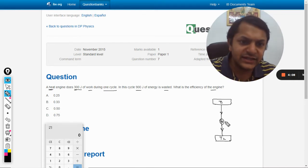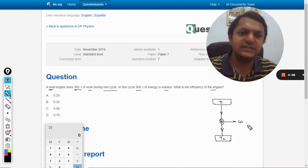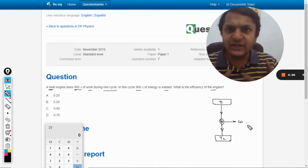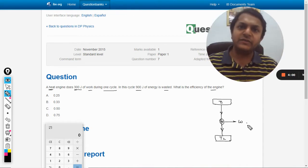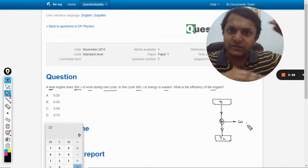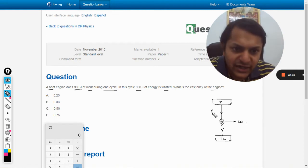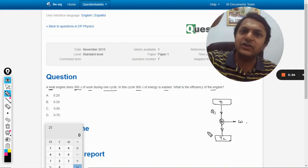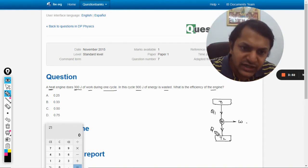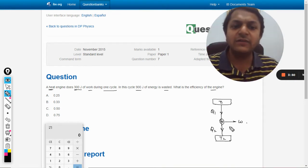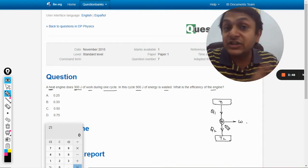This is the heat engine. This is the representation of any heat engine working in the world between two temperature limits T1 and T2. Q1 is the heat given to the engine, Q2 is the heat that is wasted, and W is the work the engine does.